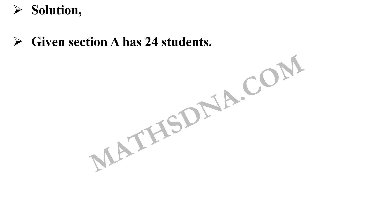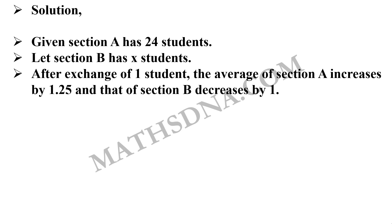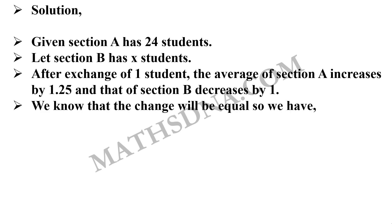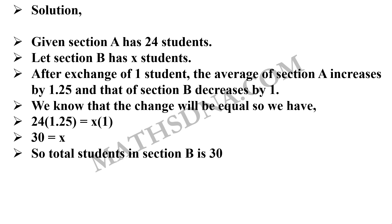Let us solve this question. As per the given data, Section A has 24 students and we have to find the number of students in Section B. Let there be x students in Section B. Since one student is exchanged, the average marks of Section A increases by 1.25 and that of B decreases by 1. The change must be equal, so: 24 × 1.25 = x × 1, which gives us 30 = x. So the total number of students in Section B is 30, which is option D.